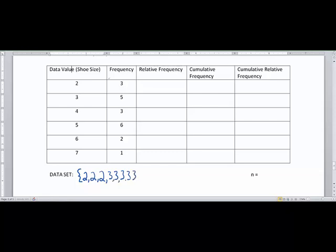Put some commas in. And then I have the 4 three times. I have the 5 six times. Alright. And then I have 6 twice. And then I have 7 once.